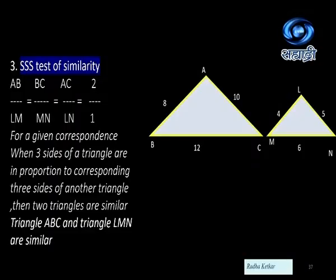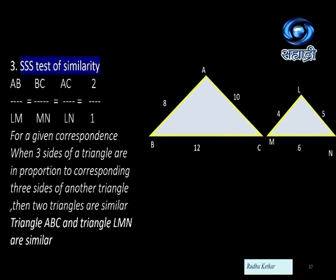Let us start with the next test of similarity: the side side side test. You can observe triangle ABC and triangle LMN. The corresponding sides are in a particular ratio. AB and LM measure 8 and 4 respectively, giving a ratio of 2 is to 1. BC upon MN is also 2 is to 1, and AC upon LN is also 2 is to 1. Since all corresponding sides have the same ratio, we say these two triangles are similar by SSS test.